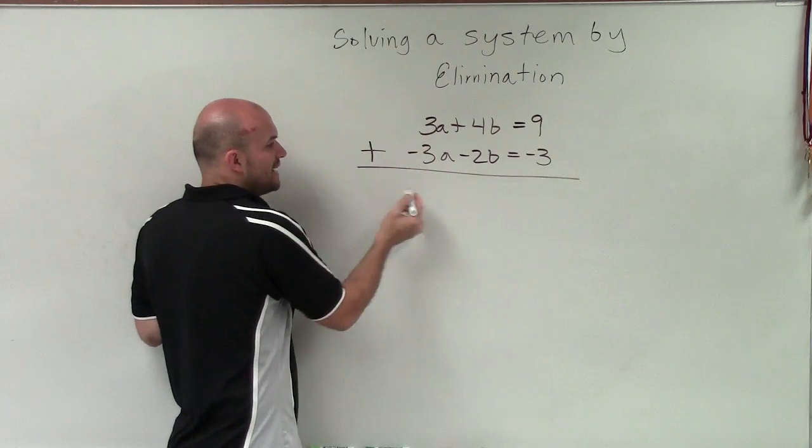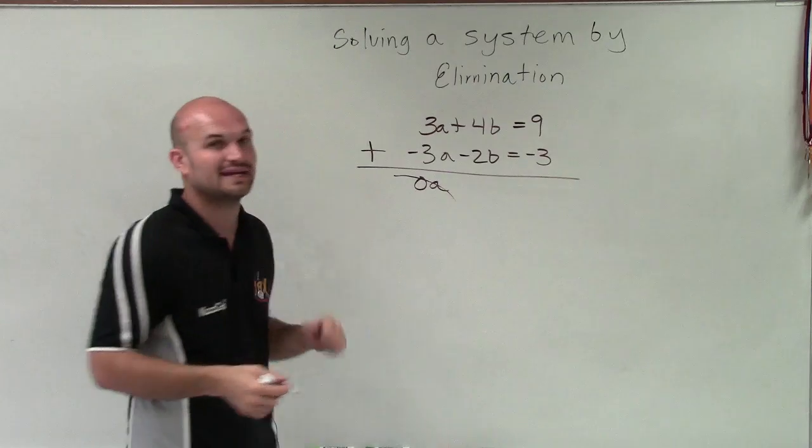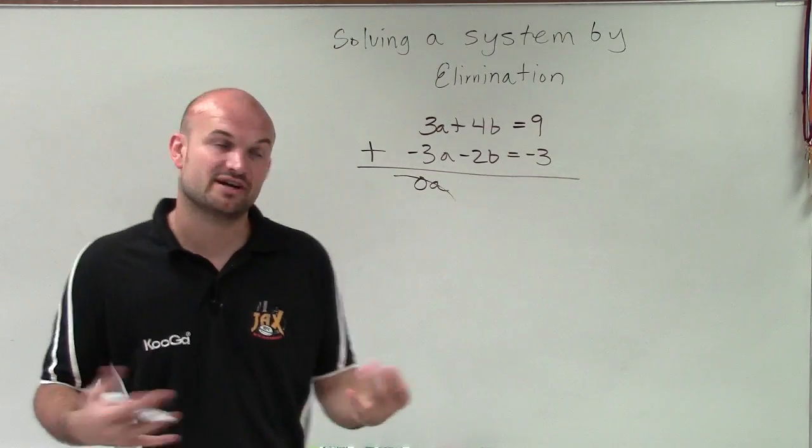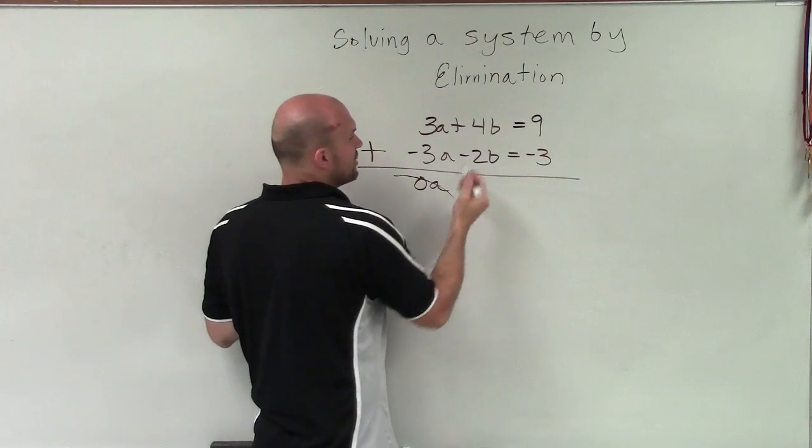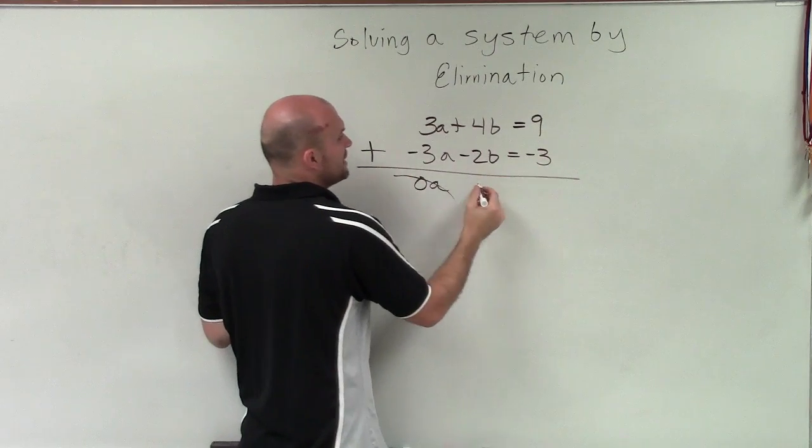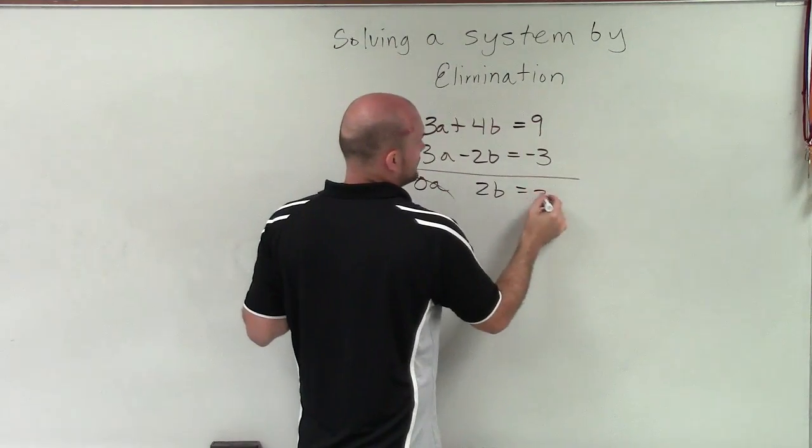Well, 3a plus negative 3a is 0a. Therefore, now I have eliminated my variable a. 4b plus negative 2b is going to be 2b. And 9 plus negative 3 equals 6.